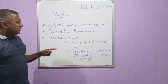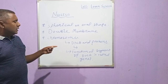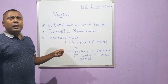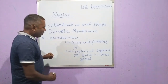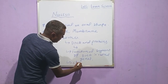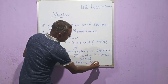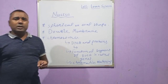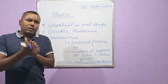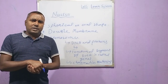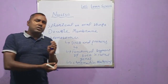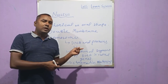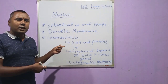DNA in a cell is present in the form of chromatin material. When a cell is used to divide, the chromatin material organizes in the cell, and the new cell also possesses the same DNA. That DNA is responsible for passing genetic information from one generation to another.